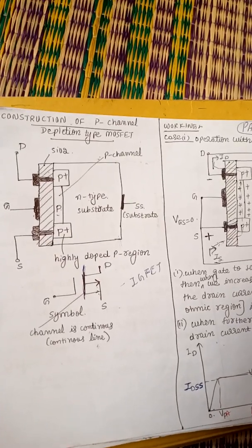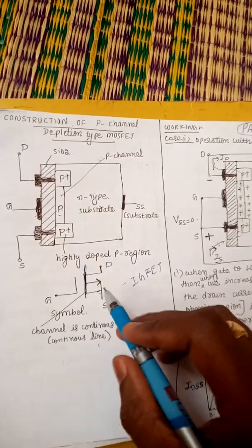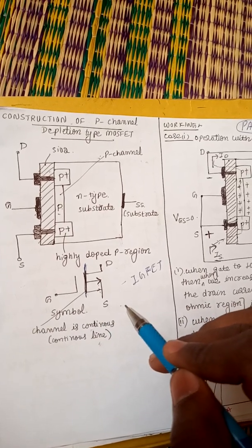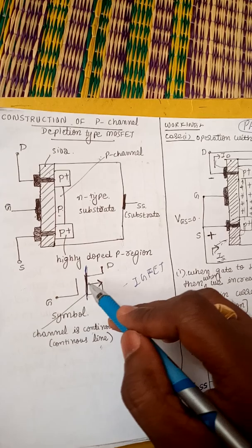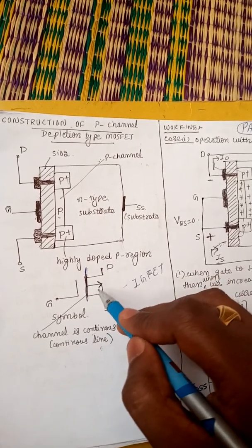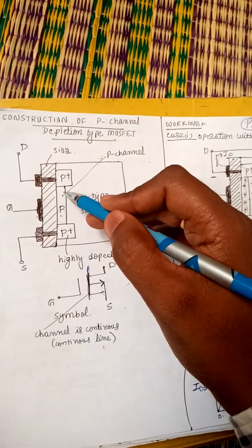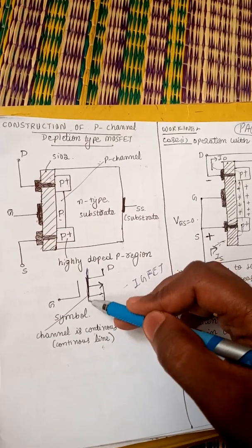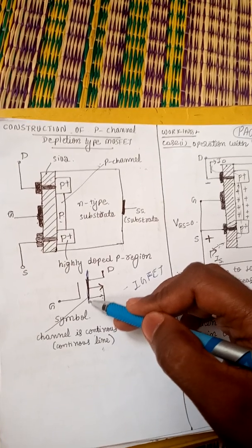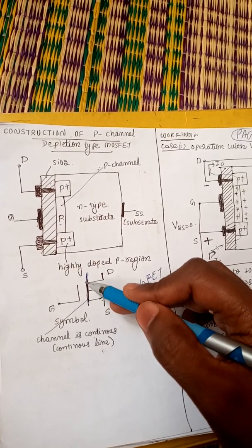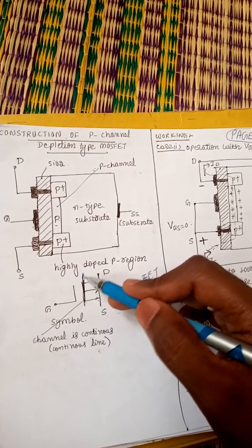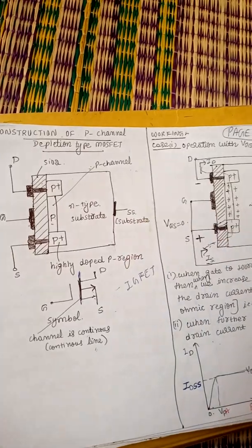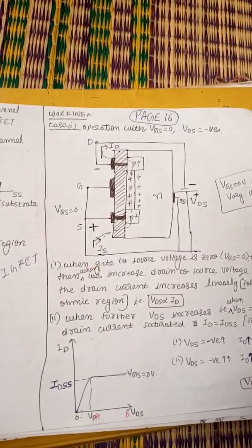The symbol for the P-channel depletion type MOSFET: in the case of N-channel, the arrow mark is inward, but here the arrow mark is outward. Due to the pre-existing channel, this line should be continuous. In the enhancement type, this position will have dotted lines. Since this is depletion type, the line is continuous.